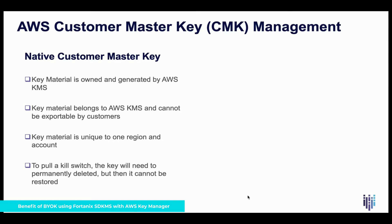We call it native customer master key. In this approach, the key material is owned and generated by AWS KMS. The key material belongs to AWS KMS and cannot be exported by customers, so you cannot export it because it is owned by AWS KMS. You have to use that key material in a particular AWS region and account. You can cross-reference keys across accounts, but the key material is unique to one region and account.